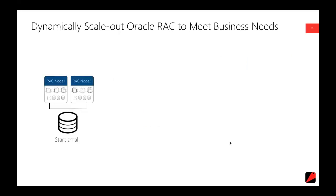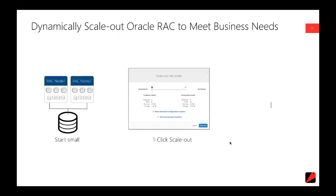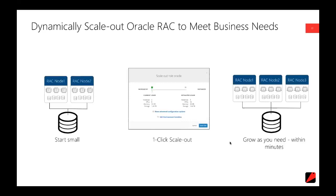Scaling out is the same thing. We're using RAC as the example here, but there are many other composite, distributed, clustered-type applications where scaling out makes equal sense. We just pull the application up, say we want to scale that out, and use the slider bar to scale out RAC by one, two, three, or four additional nodes. Then simply click Scale Out and Robin takes care of all the automation — all the plumbing behind the scenes — for adding those additional instances: adding the containers, standing up the instances, all the RAC-specific Oracle-specific work like creating additional threads of redo and related storage provisioning. Robin automates every bit of that, in just a matter of minutes.